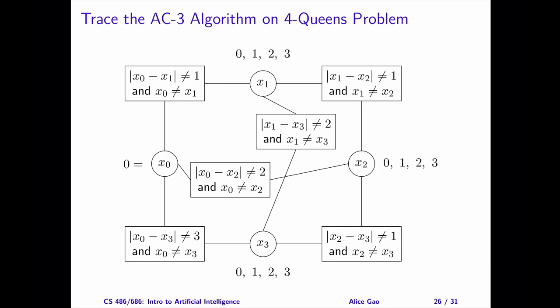I will trace the AC3 algorithm on this constraint graph. Let me start by setting x0 to be zero. For each pair of variables, I have combined the row and the diagonal constraints. For each constraint, there are two arcs, one for each variable. Therefore, at the start of the AC3 algorithm, I will add 12 arcs to the set S. When an arc has a letter S on it, it means that the arc is in set S.